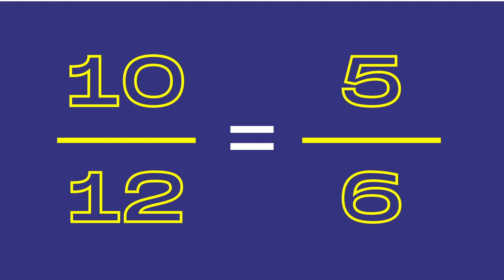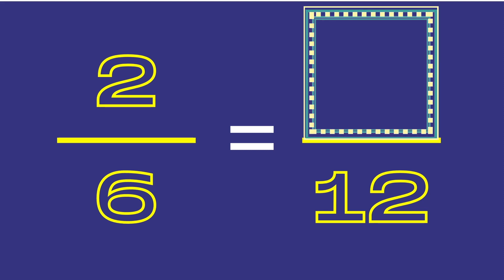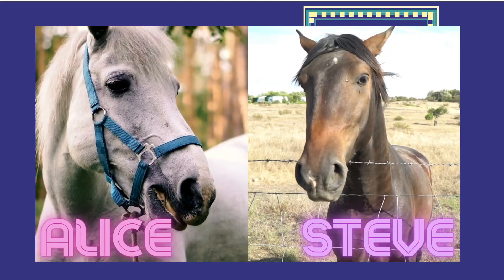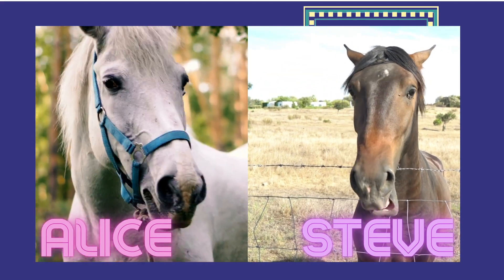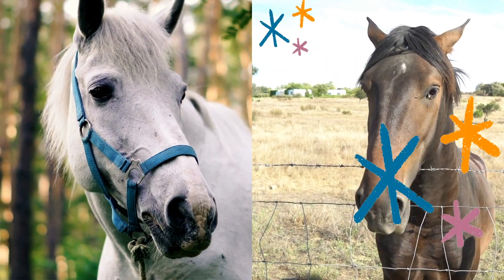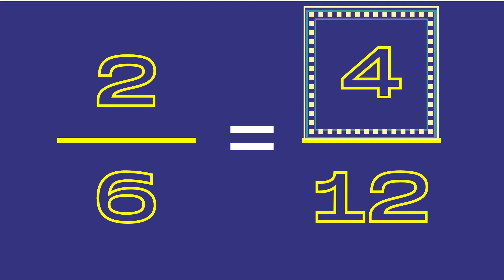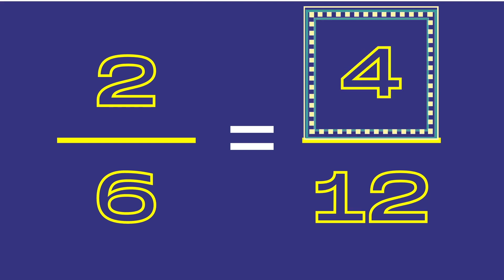Here is the next set of equivalent fractions. Name that missing numerator. Oh, good one, Glyn. It reminds me of when I was traveling abroad. It's 4. Correct again, Steve. The missing numerator is 4. To find it, you compare the denominators, and since 6 was multiplied by 2 to get to 12, then you multiply the numerator by the same number. 2 times 2 is 4. When you multiply the numerator and denominator by the same number, you will get an equivalent fraction.